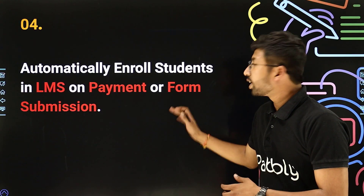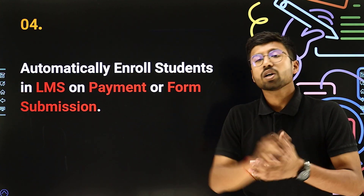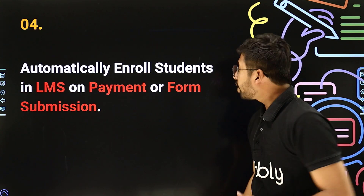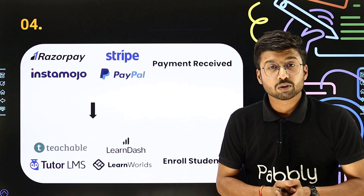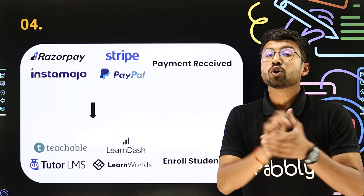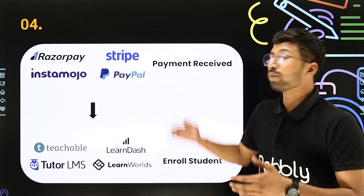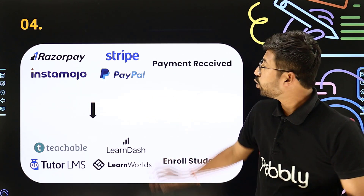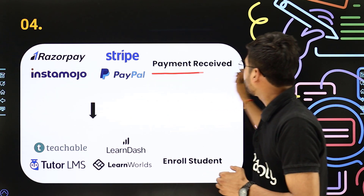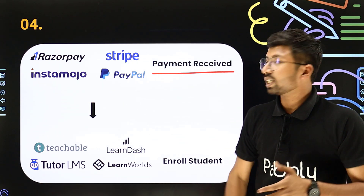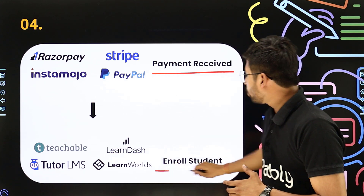Moving ahead to the fourth automation, that is automatically enrolling students in your LMS platform on a successful payment or form submission. If you are using an LMS platform like Teachable, LearnDash, TutorLMS, LearnWorld or any other platform and selling online courses, and collecting payments using payment gateways like Razorpay, Stripe, Instamojo or PayPal, you can connect your payment gateway with your LMS platform so that whenever a new payment is received, the customer is automatically enrolled in your course.